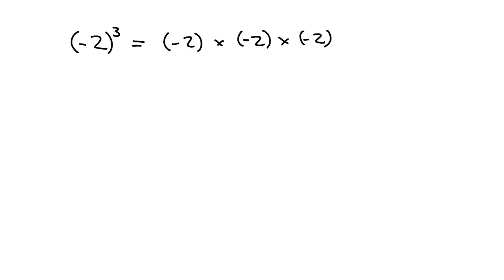What will that be equal to? Let's first deal with the signs. Here we've got negative times negative — that's a positive. And a positive times a negative — our answer will be negative. And then 2 times 2 is 4, times 2 is 8. So our answer is negative 8.